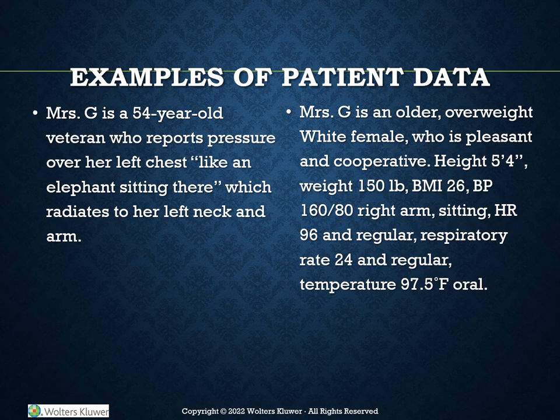The example states: Ms. G is a 54-year-old veteran who reports pressure over her left chest like an elephant sitting there, which radiates to her left neck and arm. Note that the documentation did not state 'patient is having chest pain.' While that is most likely the case, we do not make assumptions and we chart exactly what the patient says. The objective example states: Mrs. G is an older, overweight, white female who was pleasant and cooperative. Height 5'4", weight 150, BMI 26, BP 160/80 in the right arm sitting, heart rate 96 and regular, respiratory rate 24 and regular, temperature 97.5 degrees Fahrenheit orally.